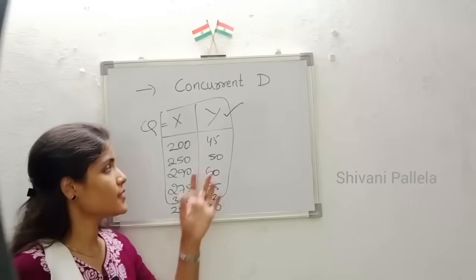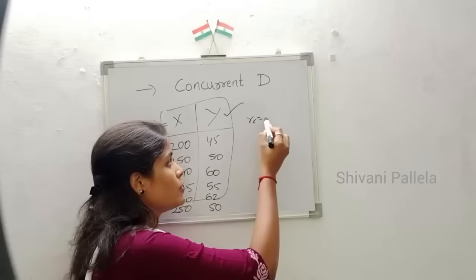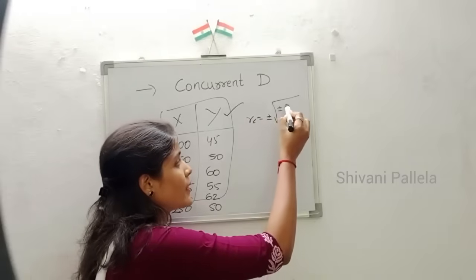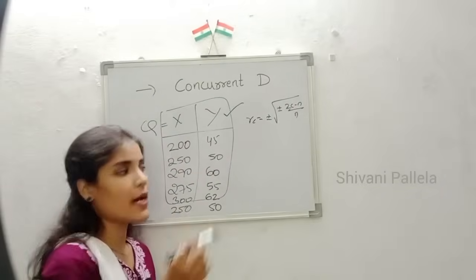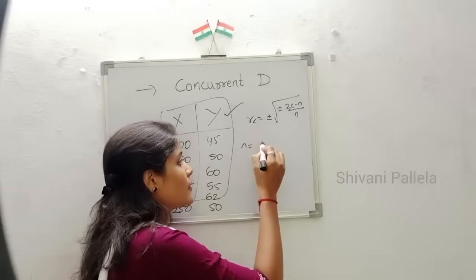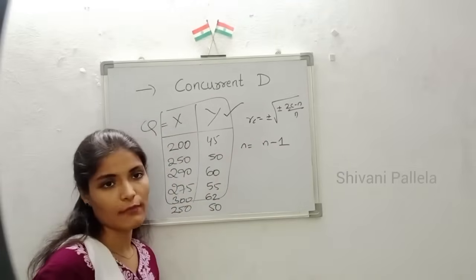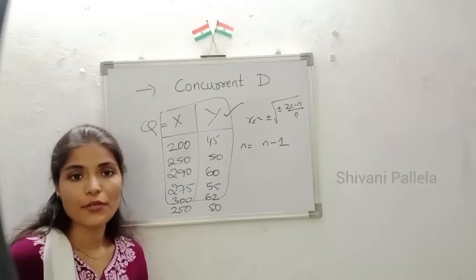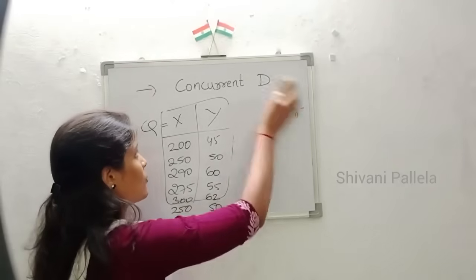The formula is RC equal to plus or minus under root of plus or minus (2C minus N) by N, where N is equal to the number of observations minus 1. Now we will discuss how to substitute this question into the formula.